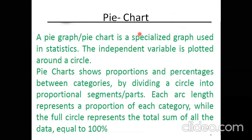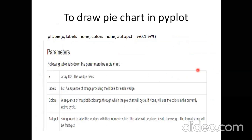Now moving on to pie charts. A pie chart is a circular representation of all your data. It generally represents data in the form of percentage, dividing all data categorically in equal proportions or whatever proportions are given. For drawing a pie chart, the syntax is plt.pie().